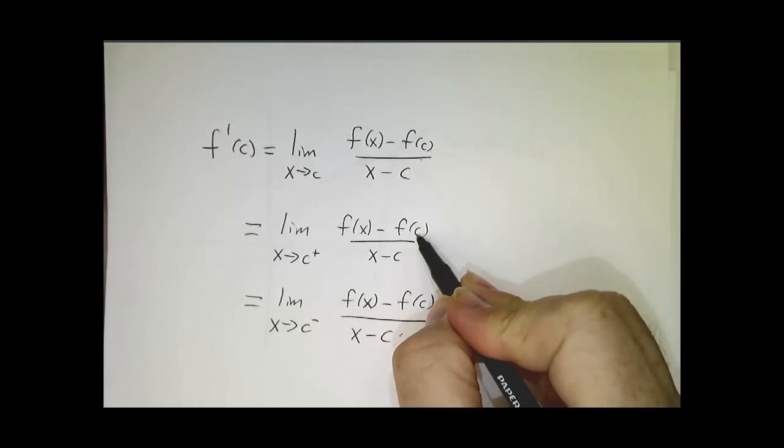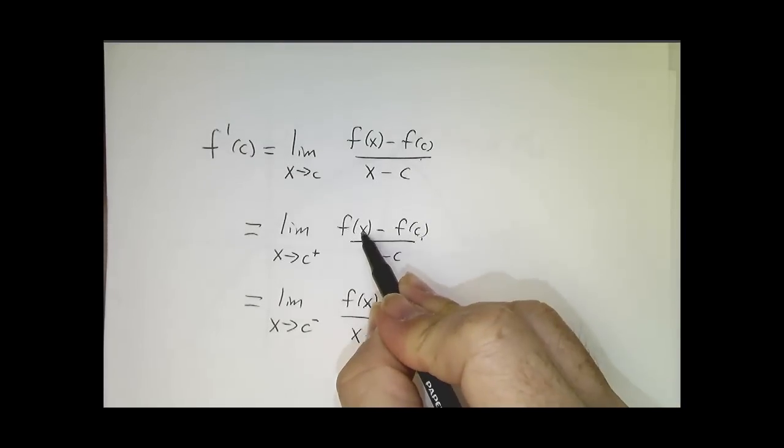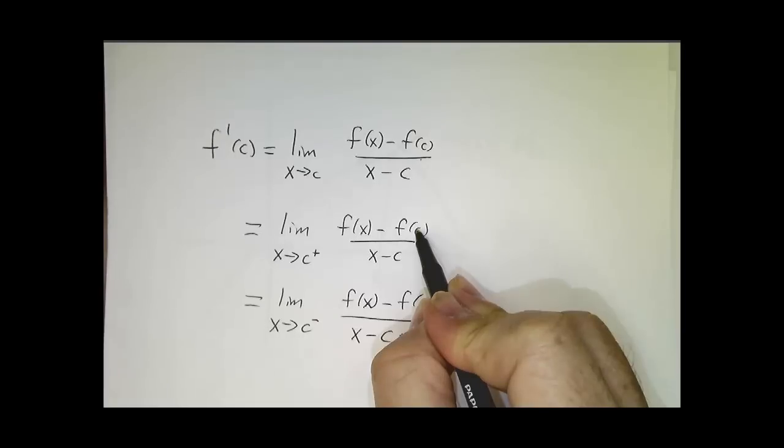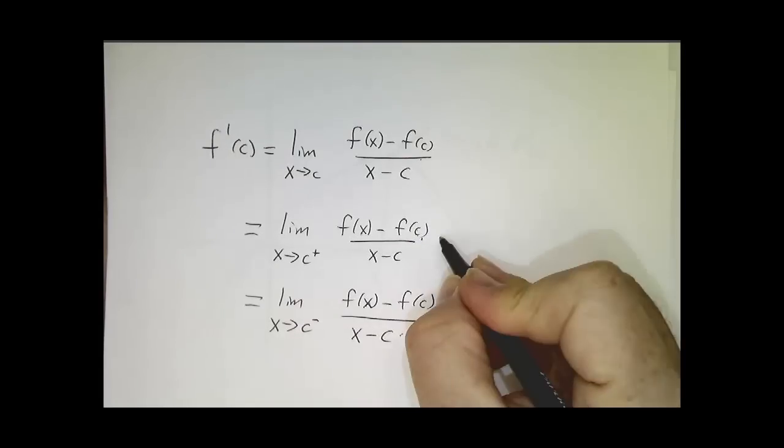But f of c is a local maximum. All of the points nearby have function values that are less than or equal to f of c. So if x is bigger than c,